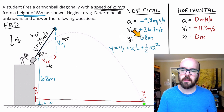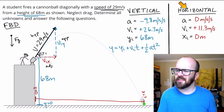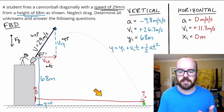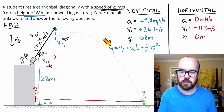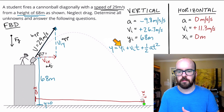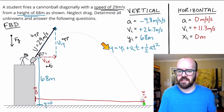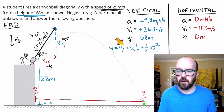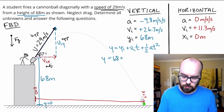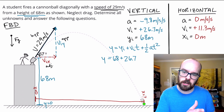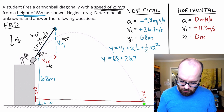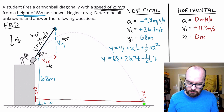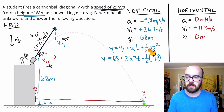Next we're going to use the vertical equation to solve for our flight time. Sometimes you could use the horizontal if you already knew that distance, but we don't, so we use the vertical. Substituting in our constants: y equals 68 plus 26.7t plus one-half times negative 9.8 t squared. Height y changes over time as it rises and falls. Our initial height of 68 meters is constant. Our initial velocity of 26.7 is constant. Acceleration is negative 9.8 — don't forget the negative. We'll go to Desmos and graph this equation.